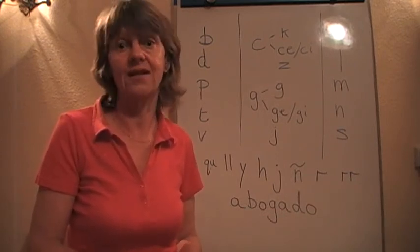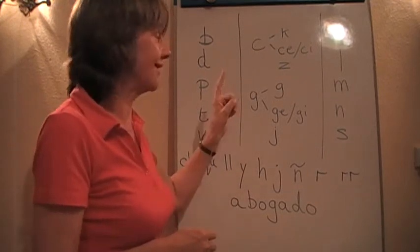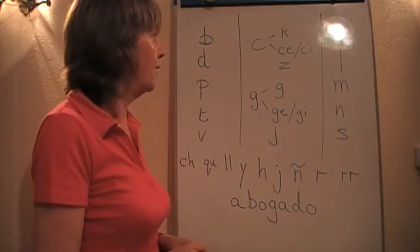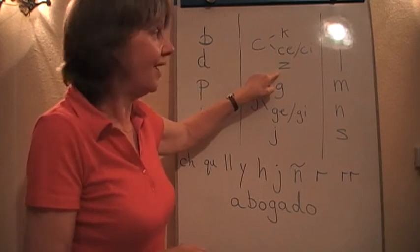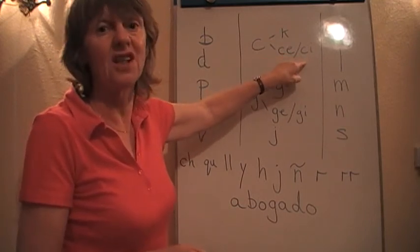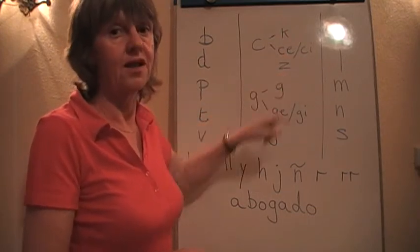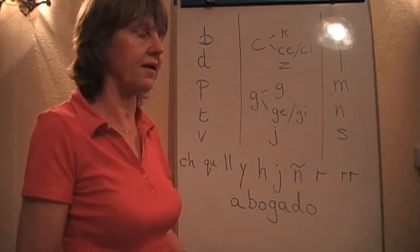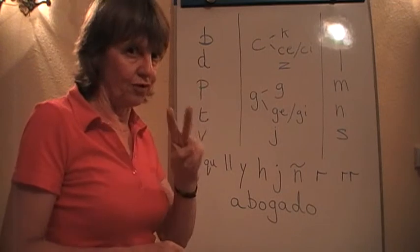So ce or ci as in gracias, for example. Any other position it's a K, like the English K. And then there's another letter, which is the Z, that's called zeta, and that is pronounced the same as the TH, the English TH. So you've got ce, ci and also the Z. It's a bit confusing saying it all quickly like this, but hopefully it'll give you a background.